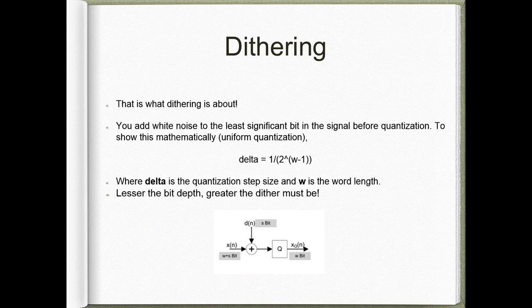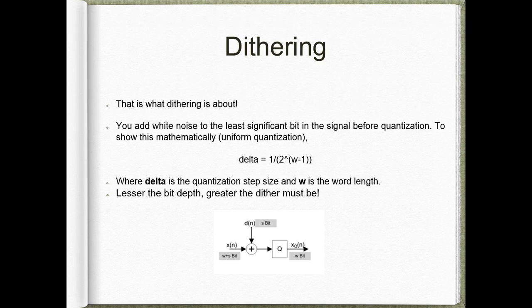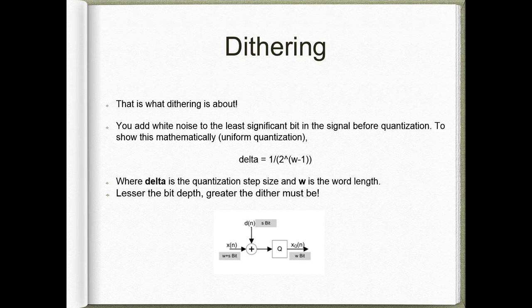How does dither function? You add white noise to the least significant bit in the signal before quantization. In the given formula, the delta is the quantization step size and w is the word length of the signal. This delta will determine the range in which our dither values lie.